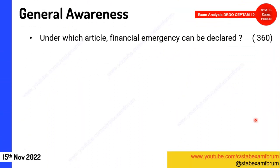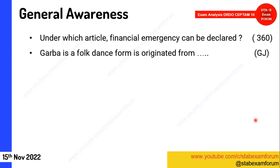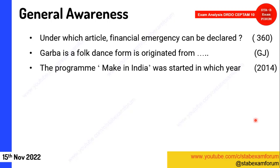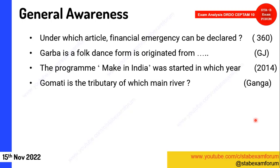Under which article can financial emergency be declared — the answer was Article 360. Then similar to the previous day: which state does the Garba dance form originate from — Gujarat. One question on Make in India: started in which year — this was confusing for most students but the answer was 2014.